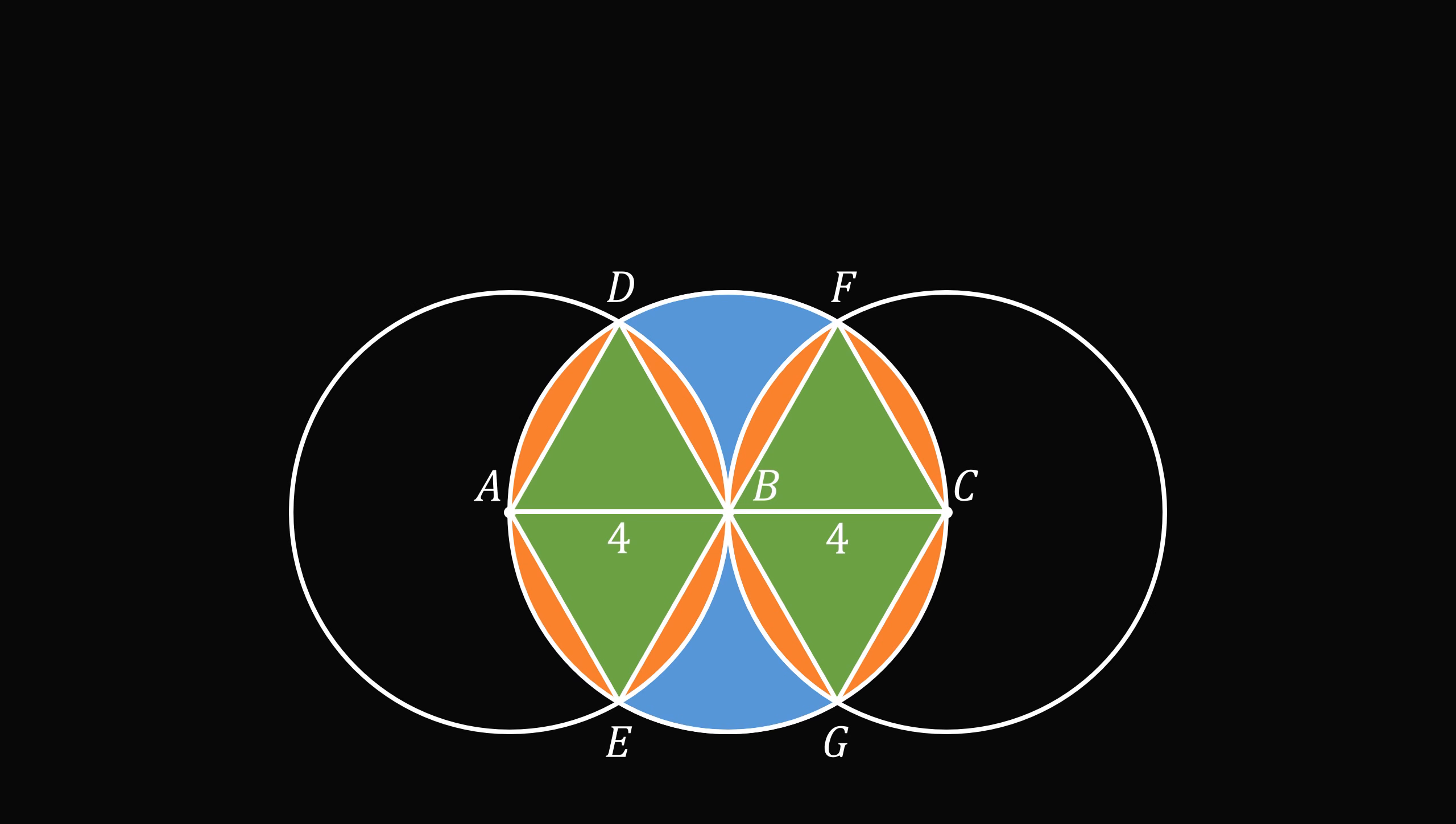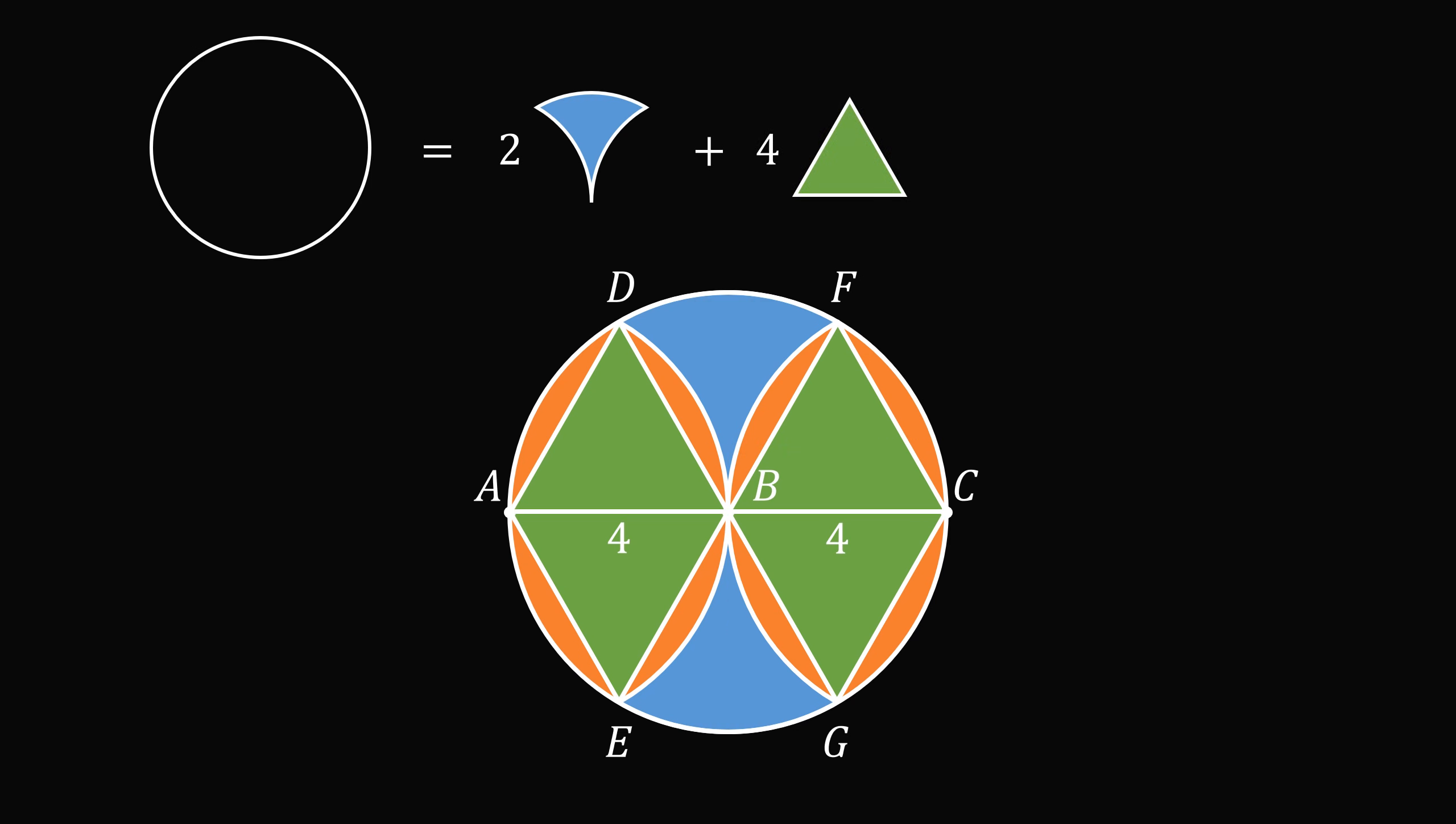Let's focus just on circle B. The area of circle B is equal to 2 times the area of a single blue region, plus 4 times the area of an equilateral triangle, plus 8 times the area of a circular segment. If we can calculate everything except the two blue areas, then we'll be able to solve for the blue areas in terms of the other areas.